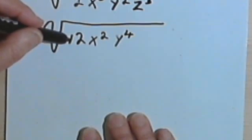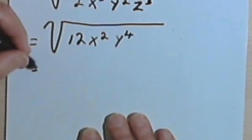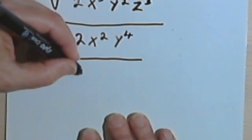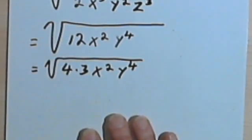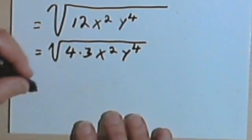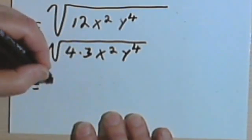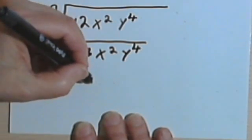I'm going to take the 12 and break it down into 4 times 3. So I'll have 4 times 3 x squared y to the 4th. Now I think I'm ready to finish the problem. So the square root of 4 is 2. I'm going to be left with a 3 under the radical sign.